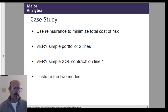We're going to take a case study. We're going to use reinsurance to minimize our total cost of risk. That is to say, the spectral risk measure required premium on our portfolio plus whatever out-of-pocket we need to pay for reinsurance. That's the total cost. So we're going to have a very simple portfolio, two lines of business with four scenarios, and a very simple excess of loss contract available on one of the lines. And we'll illustrate operating in these two modes.